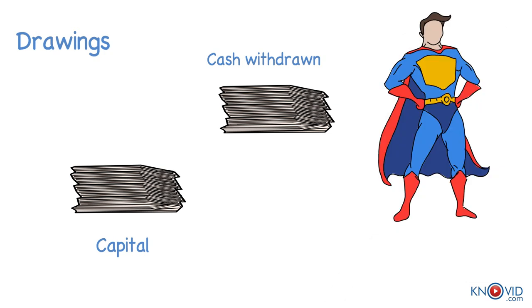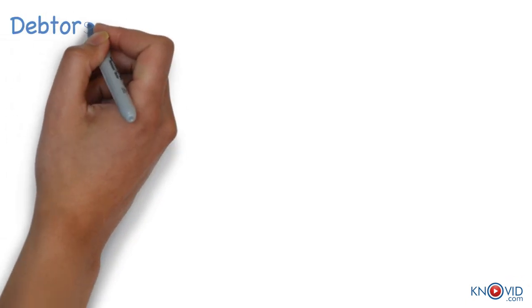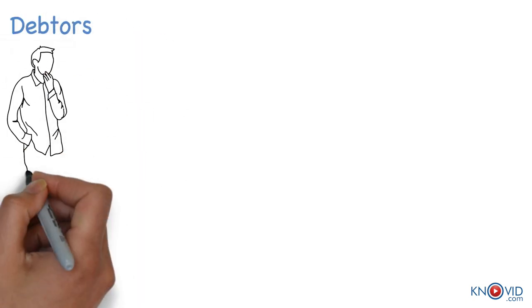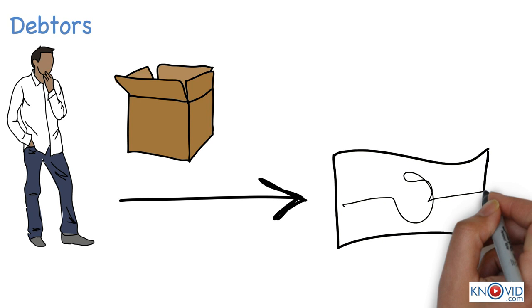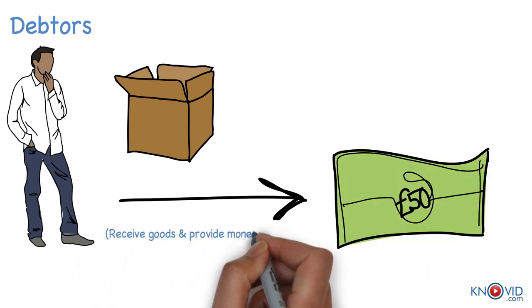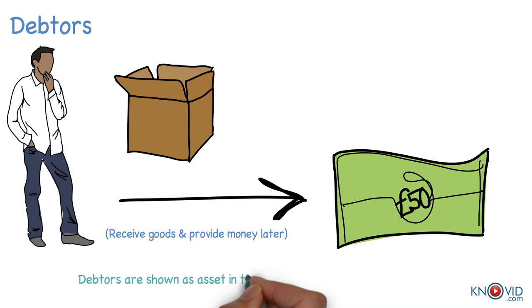Debtor is a person who receives a benefit without immediately giving money or money's worth but is liable to pay in future. For example, if my friend buys a calculator from my shop without immediately giving cash then he is a debtor till he pays for the calculator. The debtors are shown as an asset in the balance sheet because they owe money to the business.